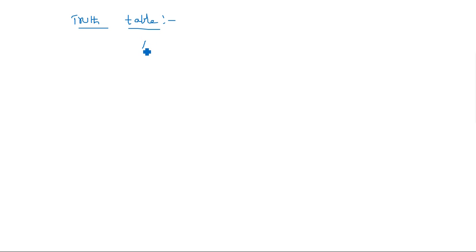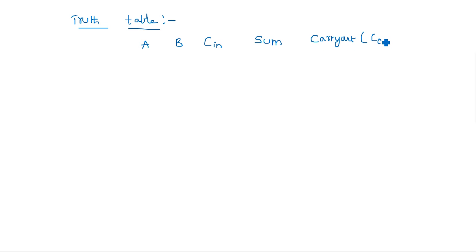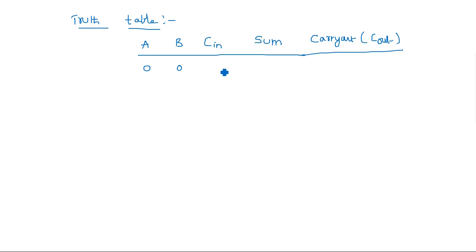The truth table of the full adder: A, B, Cin are the inputs, and Sum and Carry Out are the outputs. Carry Out is nothing but Cout.